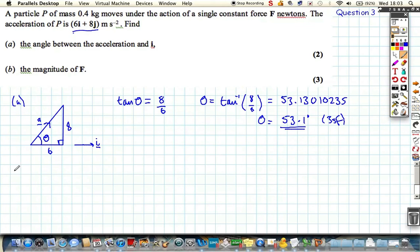For part B, we're asked to find out the magnitude of the force. So we've got something to do with force as a vector, and we've got the mass of the object, and we've got the acceleration vector. So really, this is Newton's second law, but with vectors.